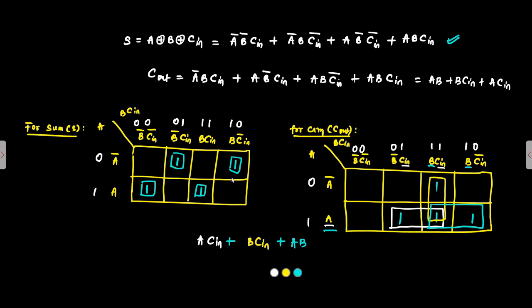So this is the Karnaugh map implementation of the full adder. For the Sum, there is no possibility of any pair formation, quad, octet, or any other kind of group formation, so single-member group formations remain and there is no further simplification. The Sum expression stays as it is. For the Carry expression, simplification was possible, and we simplified it to A·B + B·C-in + A·C-in. This is the simplified expression.